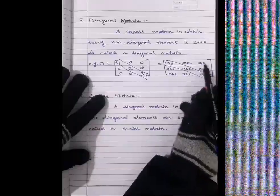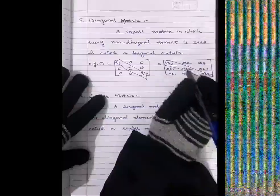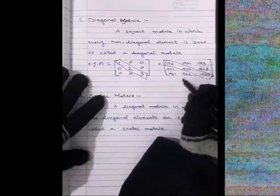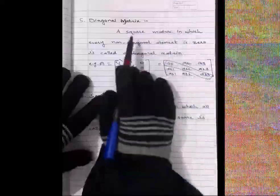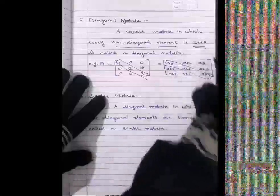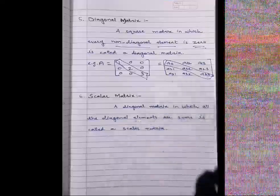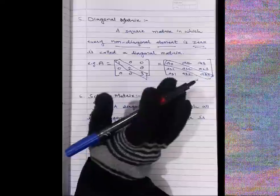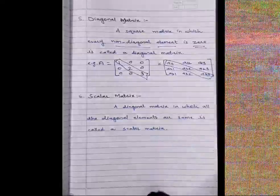So the definition: a diagonal matrix is a square matrix in which every non-diagonal element is zero. We can take any elements along the diagonal, but the six non-diagonal elements must always be zero. That is the condition for a diagonal matrix.